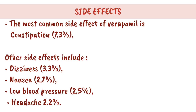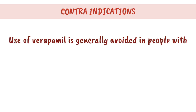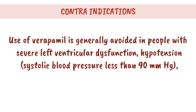Side effects: the most common side effect of verapamil is constipation, 7.3%. Other side effects include dizziness, 3.3%; nausea, 2.7%; low blood pressure, 2.5%; and headache, 2.2%.